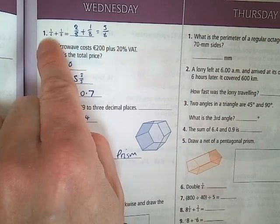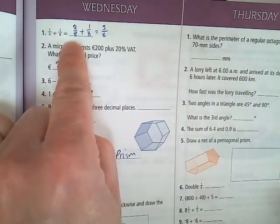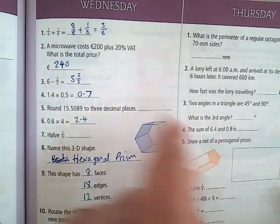1 quarter plus 1 eighth. You'd have to change 1 quarter into 2 eighths, otherwise you can't add them together. So when you have 2 eighths plus 1 eighth, the answer is 3 eighths.